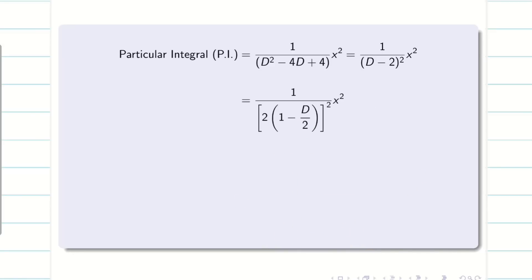Now, squaring the term separately, I will be getting 1 by 4 times 1 minus d by 2 whole square times x square. Now, I can take this to the numerator. It will become simply 1 by 4 times 1 minus d by 2 whole power minus 2 times x square.